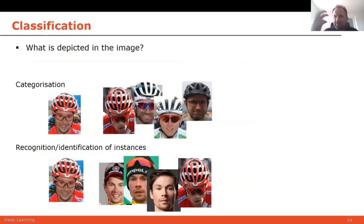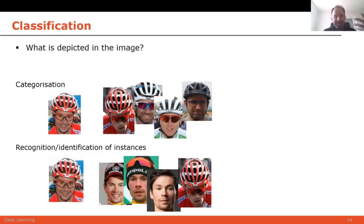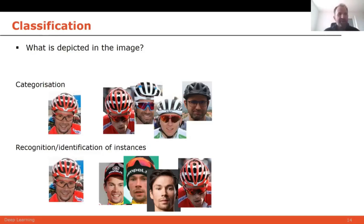You have different variants: categorization means you have a category — like bicycle rider — and all riders, successful or not, should be categorized in the same category. On the other hand, you have recognition or identification of instances. For example, Primoz Roglic is the best cyclist in the world. The idea of recognition is to recognize all different appearances of Roglic — it's a slightly different task. Localization also tells you where in the image a person is, but here you assume that in the entire image you have one person or object to detect.